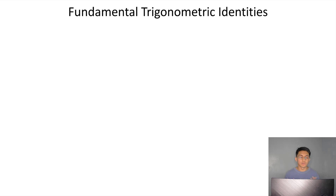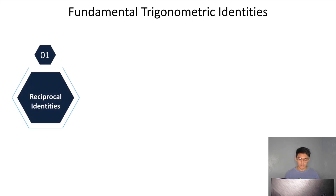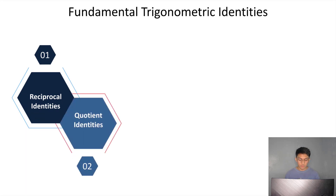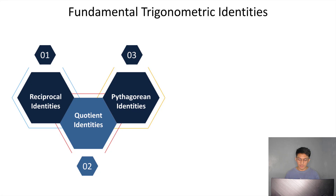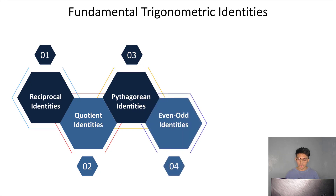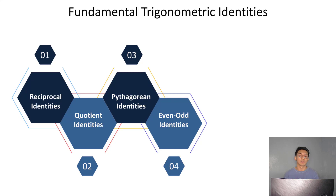An identity is an equation that is true for all acceptable replacements for the variable. We have four fundamental trigonometric identities: number one, the reciprocal identities; number two, the quotient identities; number three, Pythagorean identities; and number four, the even-odd identities. We can use these fundamental identities to find the values of other trigonometric functions using given values, and also to simplify long and complicated trigonometric equations.